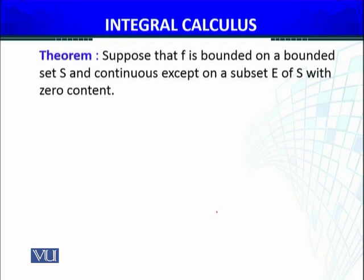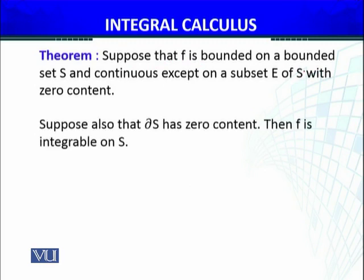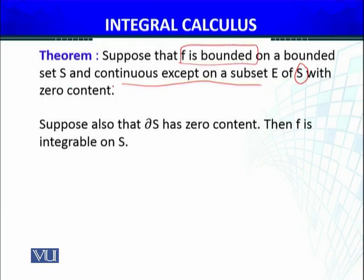We have a theorem which states: suppose that f is bounded on a bounded set S and continuous except on a subset E of S with zero content. Note that S here is not necessarily a rectangle — S does not have to be a rectangle. Under these conditions, f is bounded on the bounded set and continuous except on a subset E of S with zero content, meaning E is a subset of S where f may not be continuous.